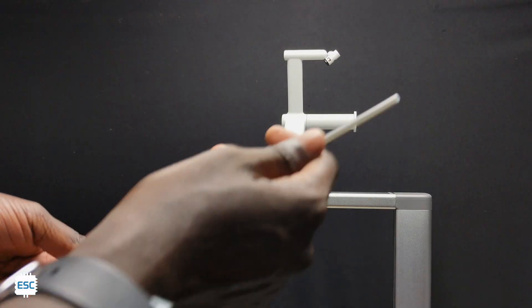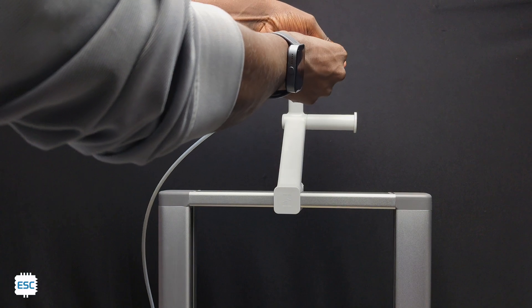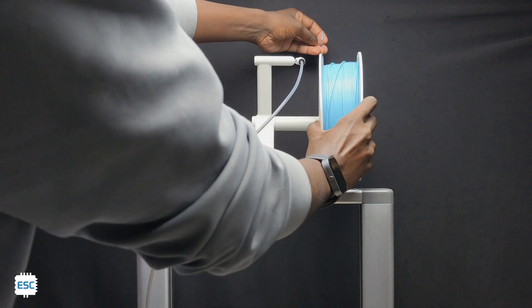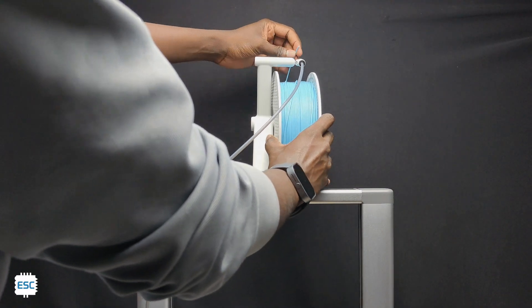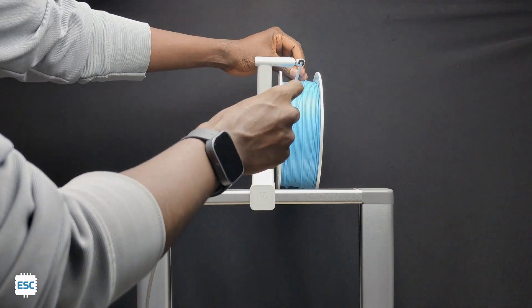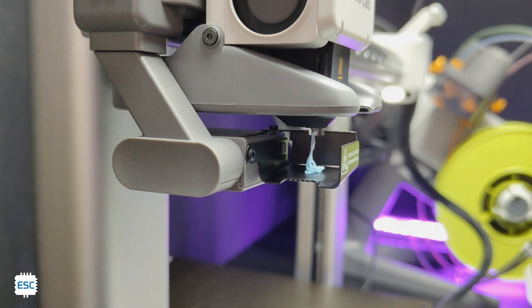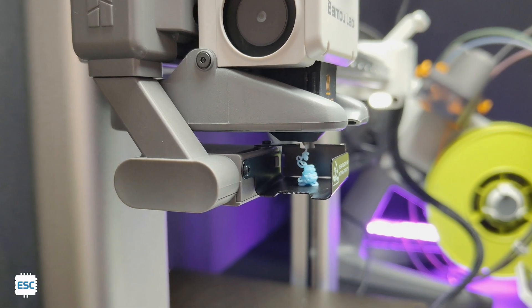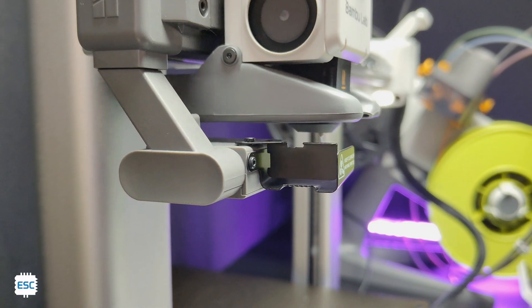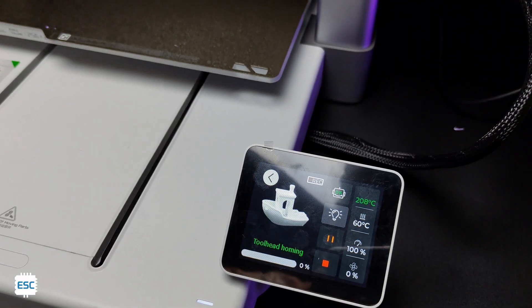For single color printing we don't need the AMS. We can mount and use this spool holder. First I tested it with normal PLA. I printed the Benchy model which comes with the printer.